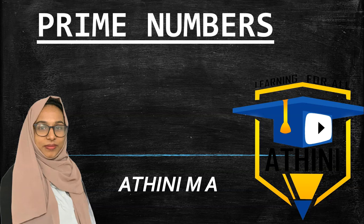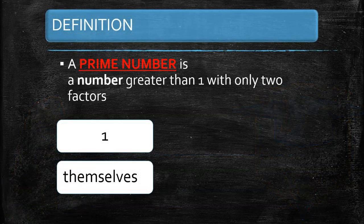I am going to talk about Prime Numbers. What is a prime number? First, I will talk about the definition. A prime number is a number greater than one with only two factors.